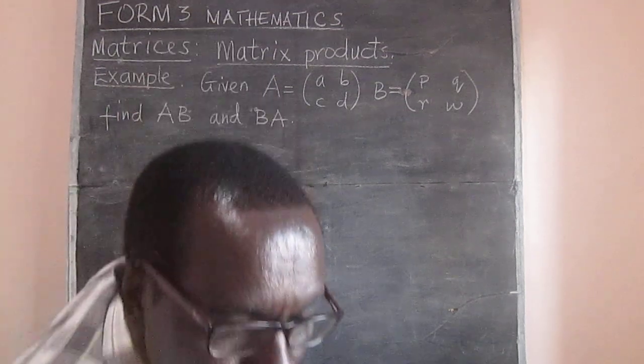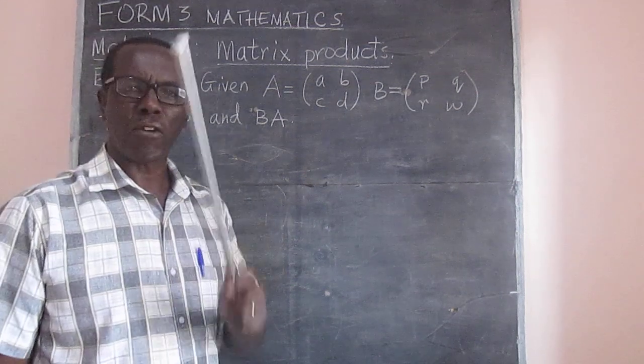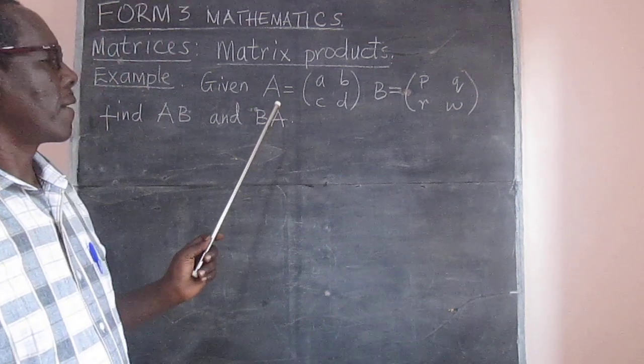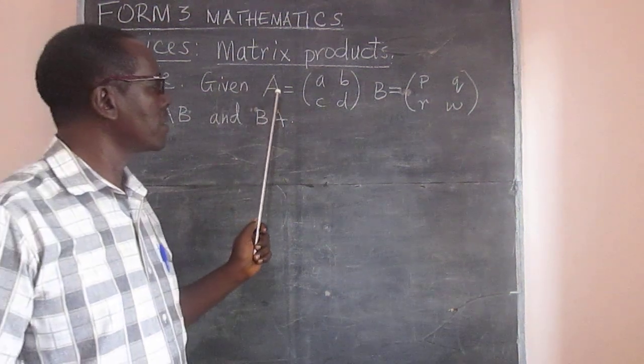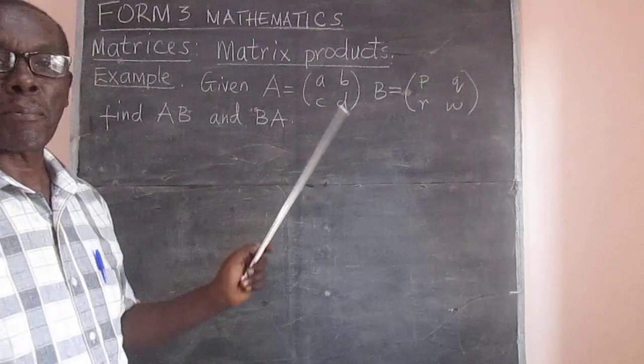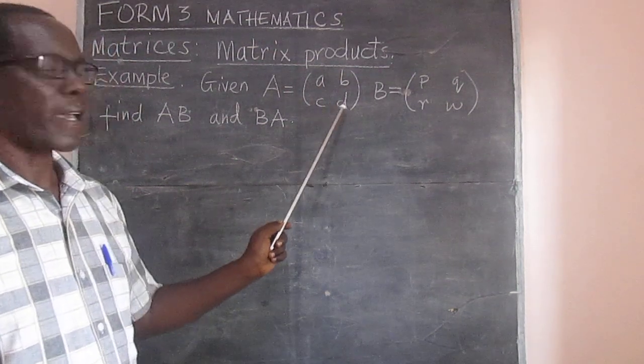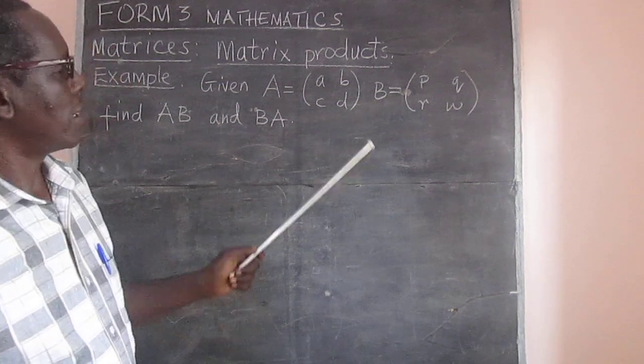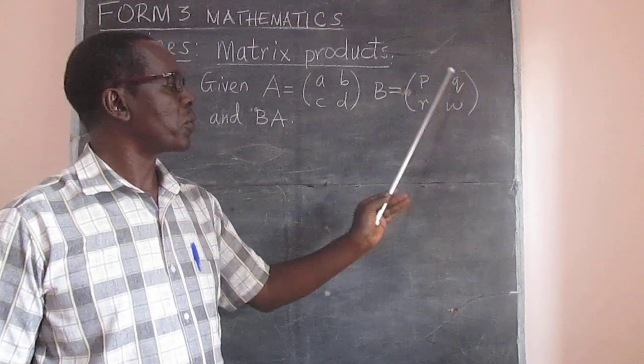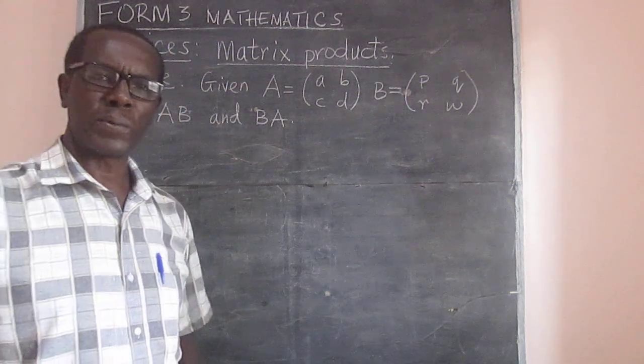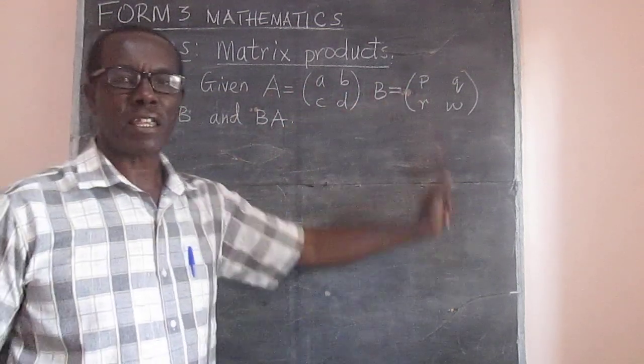And we want to see how we multiply that. I have started with a general way of doing it. So in this one, we have matrix A having the elements as A, B, C and D. And matrix B having the elements as P, Q, R and W.